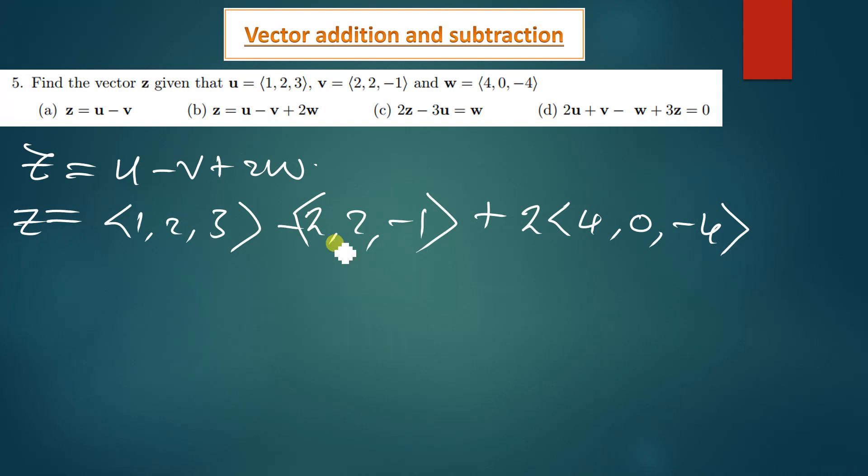Alright, so we can now work out this operation. So we have z is equal to, so 1 minus 2 we have negative 1, we have 2 minus 2 we have 0 there, then 3 minus negative 1 we have 4. Then we are adding it to this, so 2 times 4 we're getting 8, 2 times 0 we're getting 0, 2 times negative 4 we're getting negative 8. So we add these two vectors now. So addition of these vectors will also be done the same way, we'll add the corresponding components. So we have x component plus the x component there, so negative 1 plus 8 we're getting 7, comma 0 plus 0 we're getting 0, 4 plus negative 8 we're getting negative 4. So this is the solution.